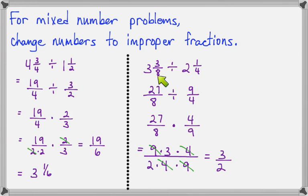But we need to change it back into a mixed number because our problem was a mixed number problem. So 2 will go into 3 once with 1 left over, so that makes 1 and 1/2.